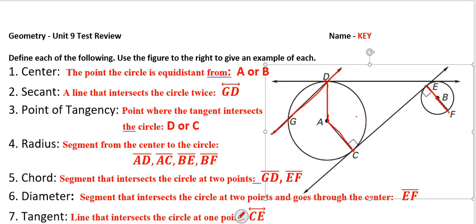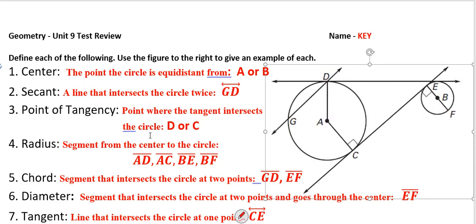Then we have a chord, which is a segment that intersects the circle at two points. If it has endpoints on the circle, then it's a chord — so that's chord GD and chord EF. The next one is the diameter, which is a segment that intersects the circle at two points and goes through the center. So EF is our diameter because it's a chord that goes through the center of the circle.